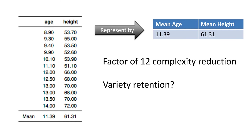But how much of the variety of the original set does this retain? Obviously, all variety is lost — nothing is retained because you are viewing this as a homogeneous group with age 11.39 and height 61.31. So variety retention is zero, but complexity reduction is huge. Representing the entire dataset by a single cluster based on the mean gives tremendous reduction in complexity but zero retention of variety.